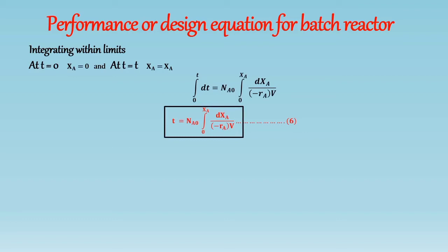Now let's derive this equation for constant volume or constant density system. So for constant volume, as epsilon A is equal to 0, and V is constant which is equal to V0, the general equation becomes... In this equation we can write V0 out of the integration because it is constant.